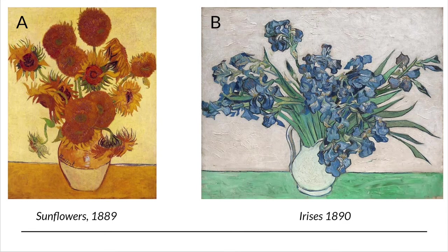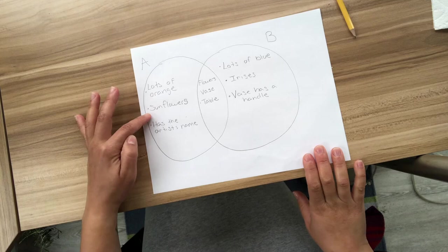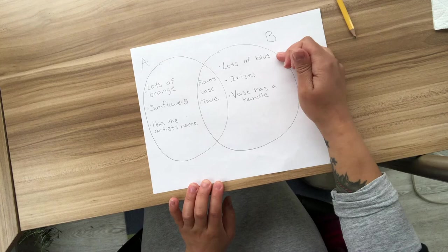Let's think about how these pictures are different now. Let's start with picture A — your responses will go in circle A on the outside part that does not overlap circle B. Picture A has a lot of orange, the artist used sunflowers, and if you look real close, the vase has the artist's name on it. For picture B, your responses go in the outside circle of B. Picture B has lots of blue, the artist used irises, and the vase has a handle.